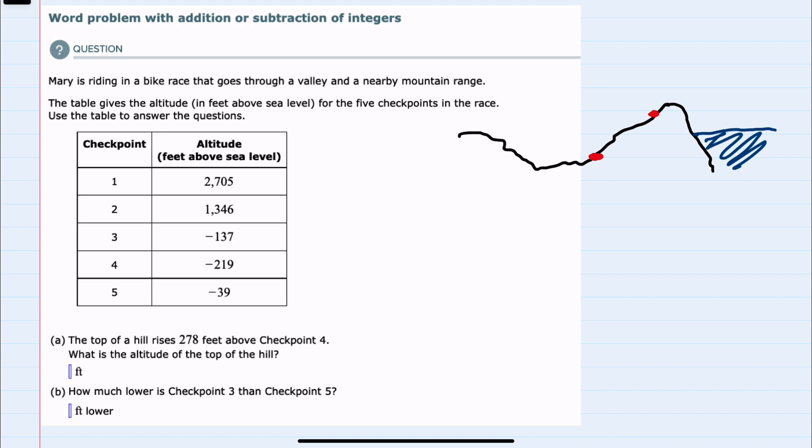We are asked a couple of questions. The first says that the top of the hill rises 278 feet above checkpoint 4. So at checkpoint 4 there's a hill that rises 278 feet above.